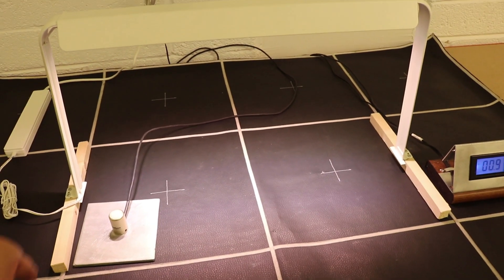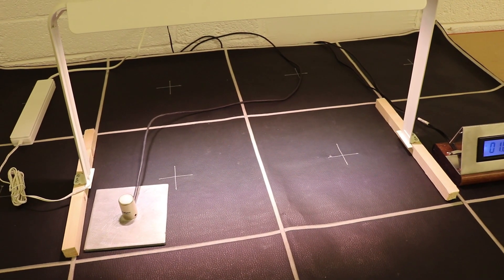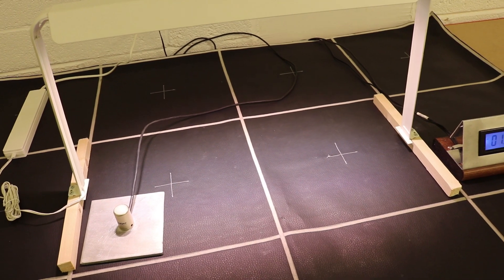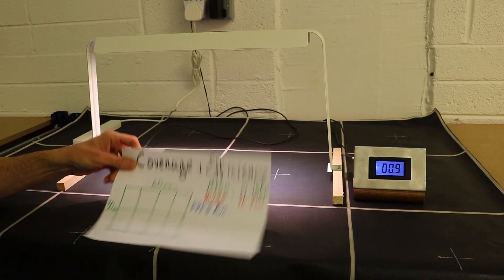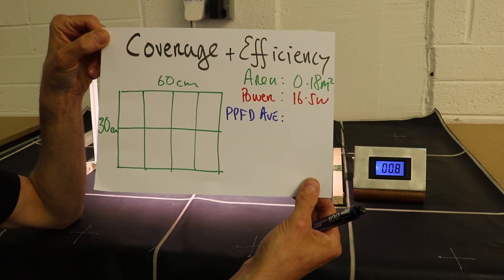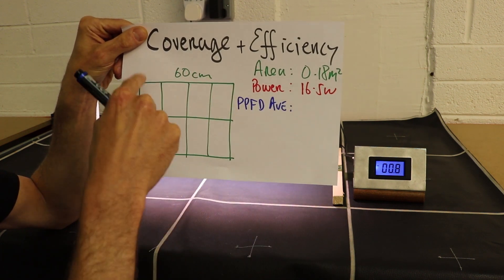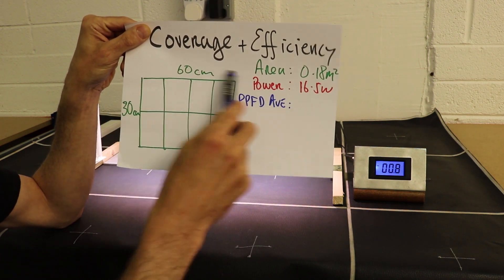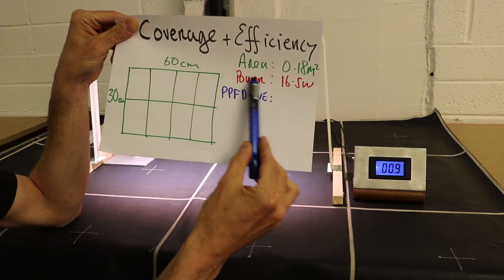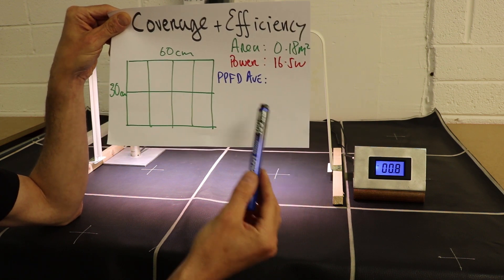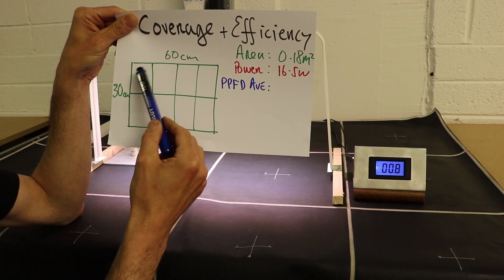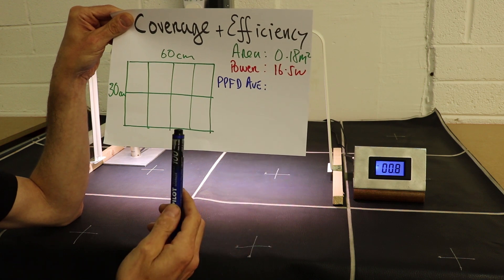So we've divided this 30 by 60 centimeter grow area into eight squares and we're going to measure the PPFD level in each of those squares. I've done up a little worksheet here and you can see we've marked out the 60 centimeter by 30 centimeter area. So the area is 0.18 meters squared. We've taken down the power which is 16 and a half watts, and now we're going to take the PPFD in each of those squares, total it up, divide by eight and get the average.